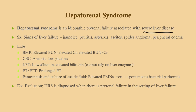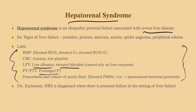Lab findings include a pre-renal picture plus features of liver failure: low albumin, elevated bilirubin, prolonged PT due to decreased clotting factor production, and ascites. Vasoconstrictors are often used in treatment. Antibiotics such as ceftriaxone are given presumptively — not because this is an infection, but because the risk of spontaneous bacterial peritonitis is high. This is a diagnosis of exclusion, and you need to know how to recognize it.